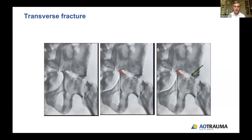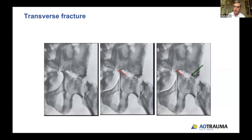The transverse fracture patterns can disrupt really all of the lines except the teardrop, which is usually intact. There'll be a disruption of the iliopectineal and ilioischial lines and a break through the anterior and posterior rim of the acetabulum. In these high fractures, there will also be a break in the radiological roof.